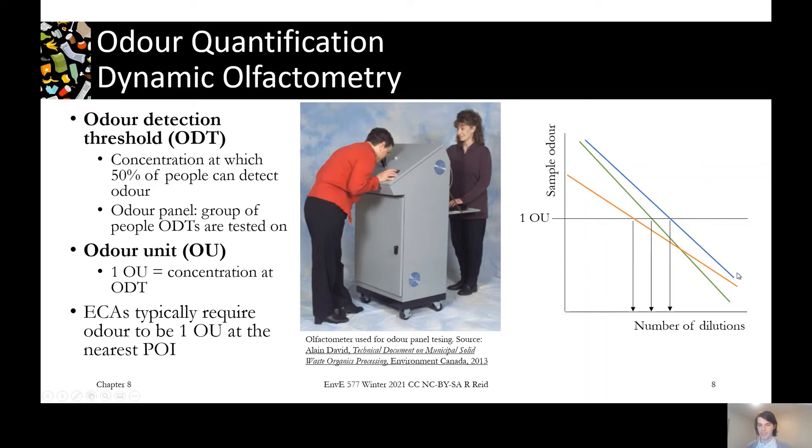In my figure here, it would be starting over here - a high number of dilutions - and normally you can't smell anything. It's supposed to start below the odour detection threshold. You'll be asked yes or no, can you smell it? Then you press a button and get the next dilution. You'll work into less and less dilutions, getting closer to the raw sample. At a certain point, you'll stop saying no I can't smell it and start saying yes I can smell it. That's where you've crossed the odour detection threshold, this one odour unit line. It'll be at a different number of dilutions for different people.